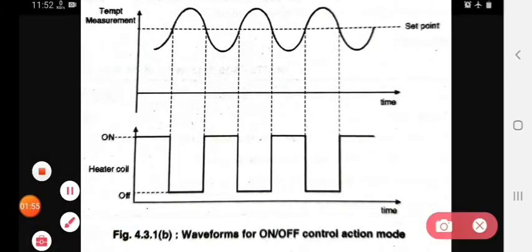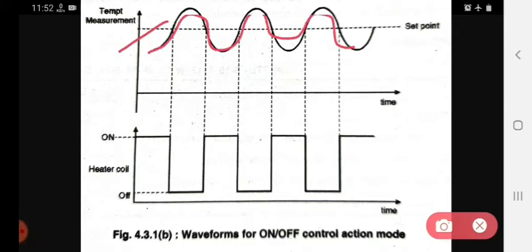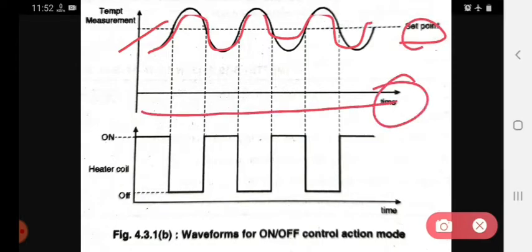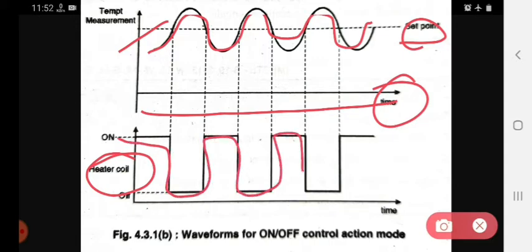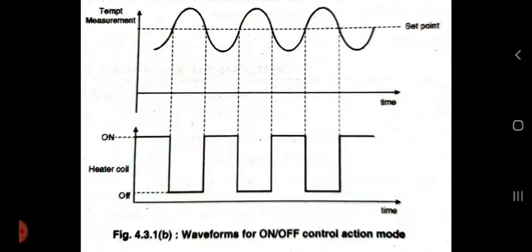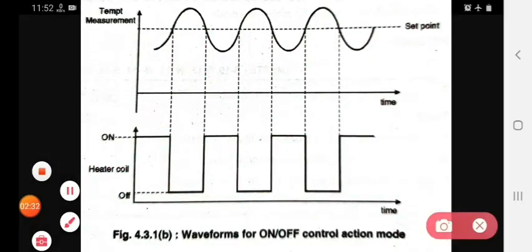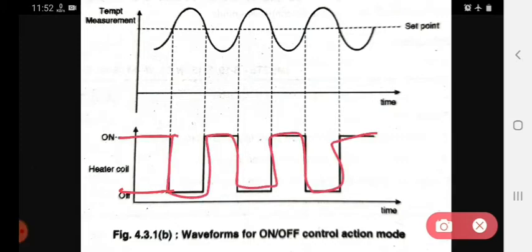This is the waveform for temperature measurement at the set point, shown against time. This is the heater coil waveform in time: on state, off state, on state. This is the waveform for on-off control action mode — this is for off and this is for on. This waveform is only for the heater coil.